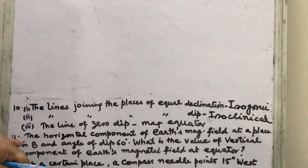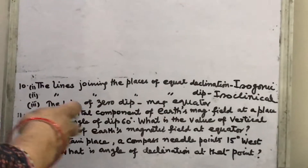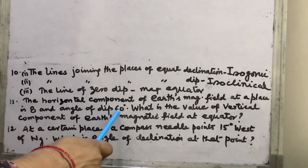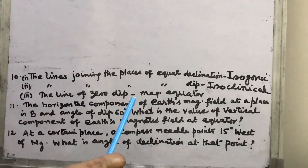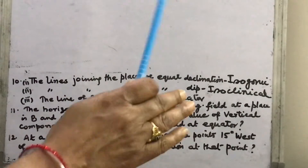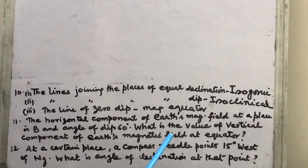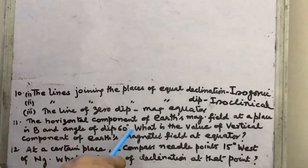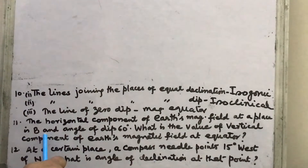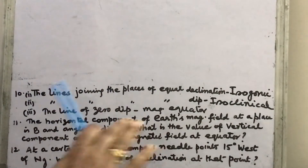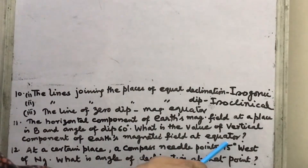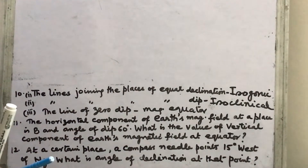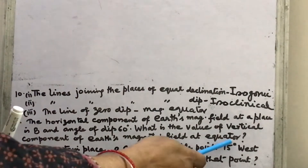Eleventh question: the horizontal component of Earth's magnetic field at a place is B and the angle of dip is 60 degrees. What is the value of the vertical component at the equator? This is a trick question — the 60 degree angle is meant to confuse. The question asks for the vertical component at the equator, where Earth's magnetic field is totally horizontal. So the vertical component is 0.